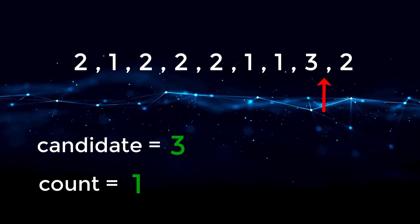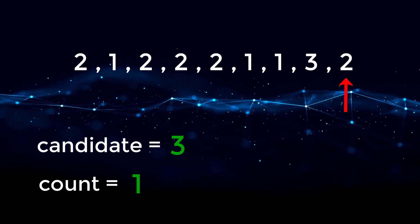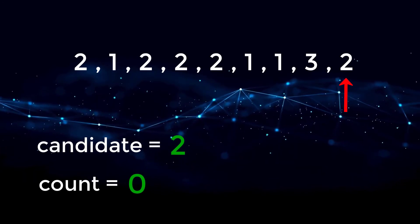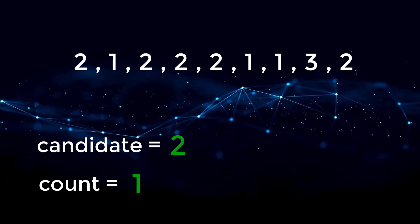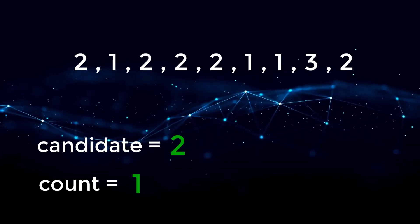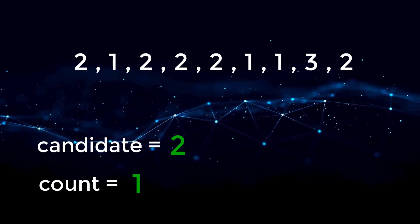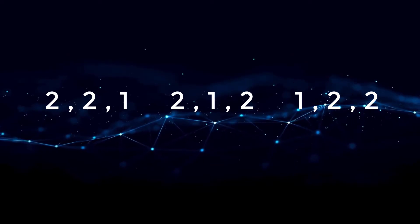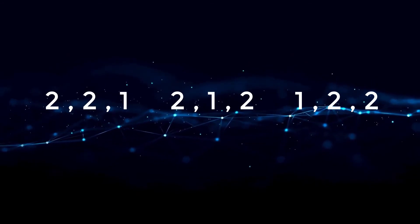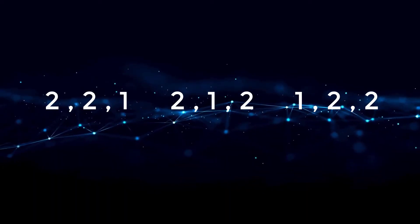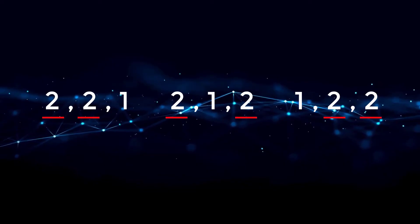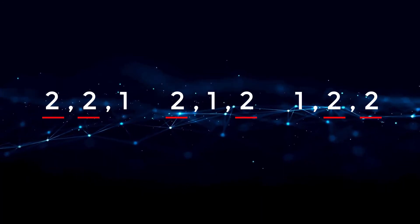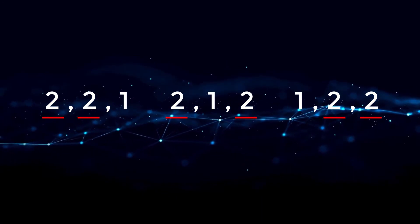Finally, we move to number two — two is not equal to three, so we decrease count to zero, take the new candidate, and we are left with candidate equal to two and count equal to one. By the end of looping over our array, whatever element is assigned to our candidate variable must be the majority element.